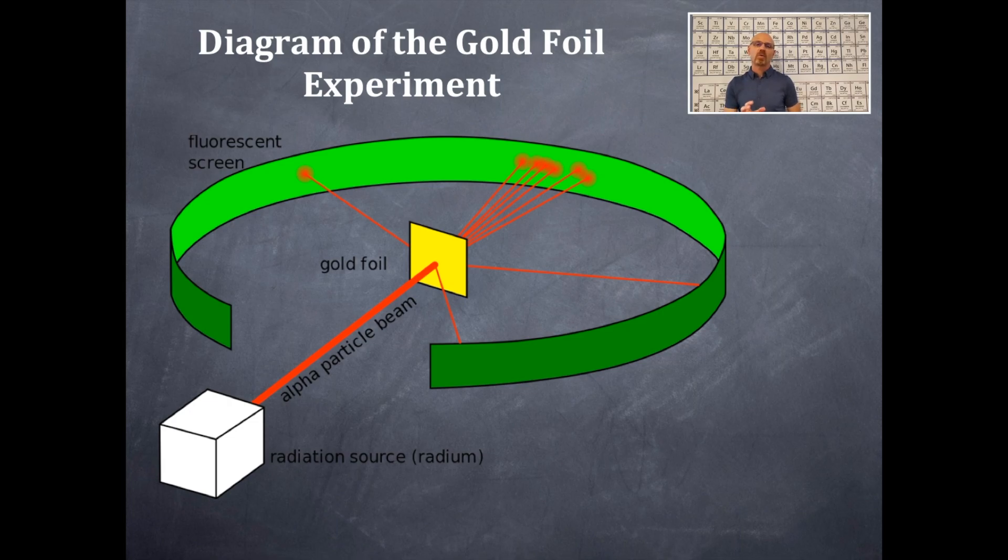You should see in that little white box right there was the radiation source. That was radium really specifically. And then in the middle of this was a piece of gold foil, like two, three atoms thick, very thin gold foil.